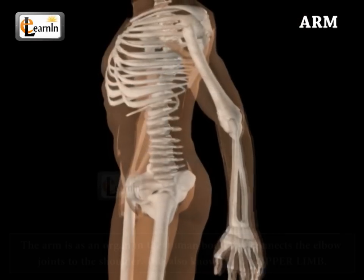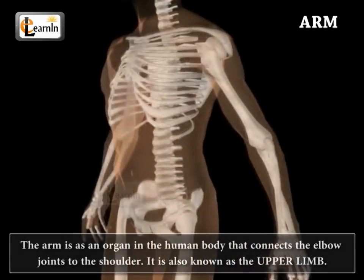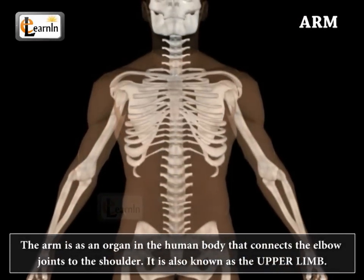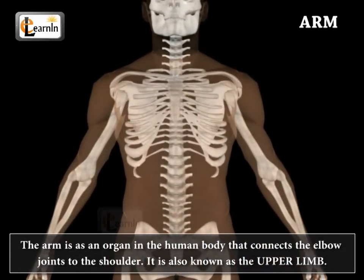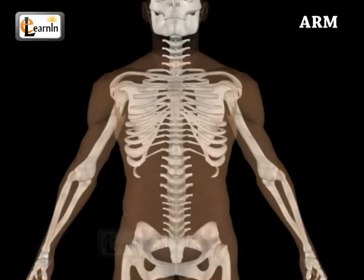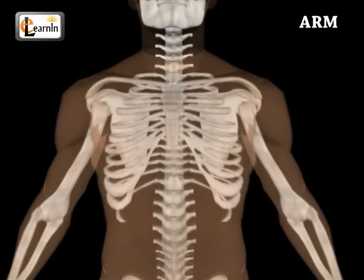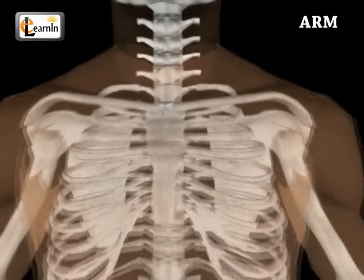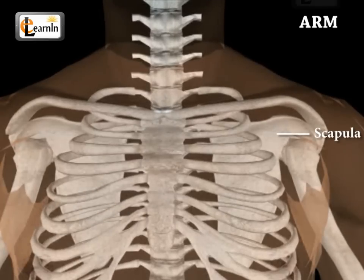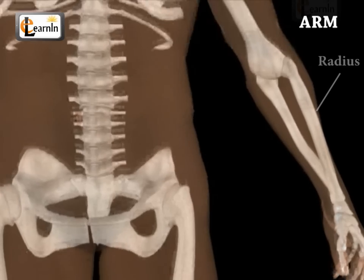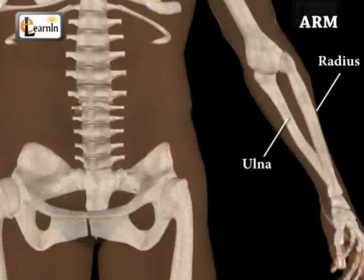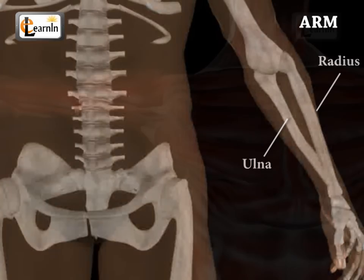The arm is the part of the body that connects the elbow joints to the shoulder. In biological terms, it is known as the upper limb, but it is commonly termed as the arm. The bone in the upper arm is known as the humerus. This bone fits at the top near the shoulder blade, which is called the scapula. At the lower end, it joins the radius and the ulna, which are the bones of the forearm.